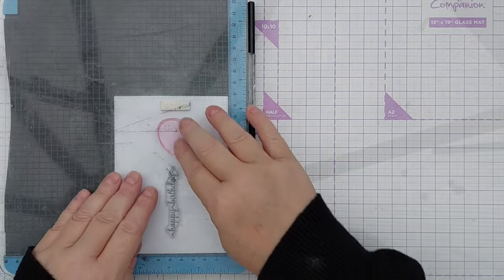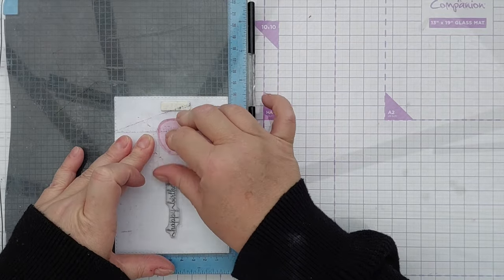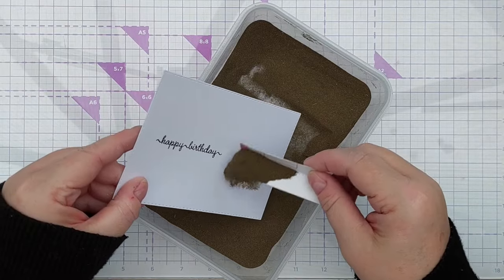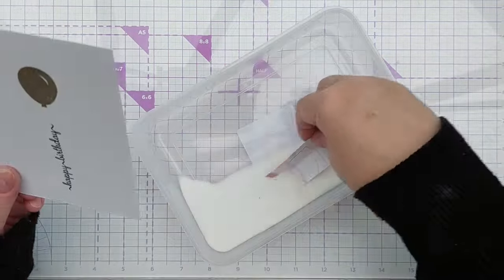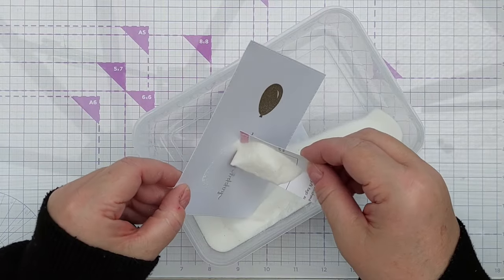For the balloon I drizzled over some gold embossing powder with a little scoop that I made out of a scrap piece of paper, and the sentiment I did exactly the same thing but with clear embossing powder.